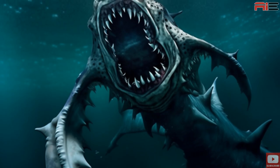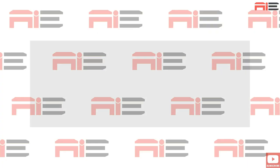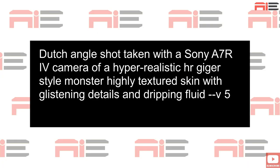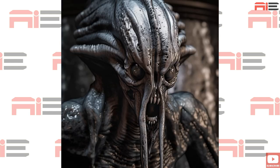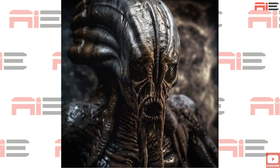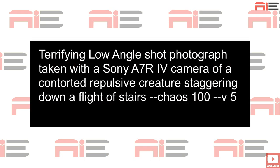I'm going to leave the scary mermaid for now. I'll try: 'Dutch angle shot taken with a Sony a7R IV camera of a hyper-realistic H.R. Giger style monster with highly textured skin with glistening details and dripping fluid.' These are nice. Let me also try: 'Terrifying low angle shot photograph taken with a Sony a7R IV camera of a contorted repulsive creature staggering down a flight of stairs.' I'll add chaos 100.